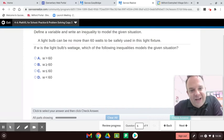All right, guys, let's look at this one. Define a variable and write an inequality to model the given situation. A light bulb can be no more, so that's a key word, underline that, no more than 60 watts to be safely used in this light fixture. So could it be 60? Yeah, it could be 60. Could it be more than 60? No. Could it be less? Yes.